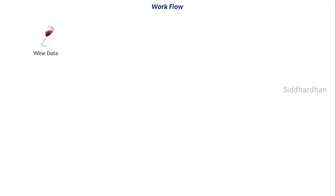Once we have this wine data set, we will do some data analysis on it. We need to find which parameters are important for having good wine quality. There can be several relationships between various features — for example, we will analyze the relationship between citric acid content and quality of the wine, checking whether quality increases if we increase the citric acid content. We will also use visualizing techniques like plots and graphs to understand this. This data analysis part gives you a better understanding of the data set.